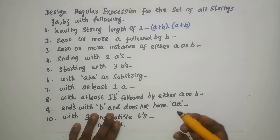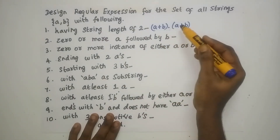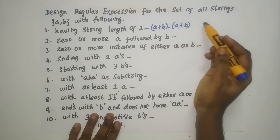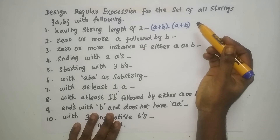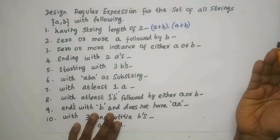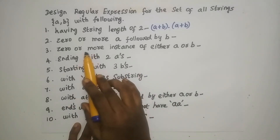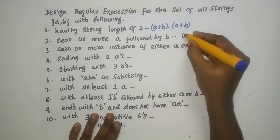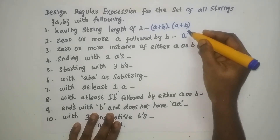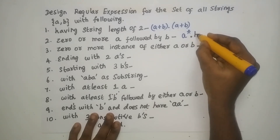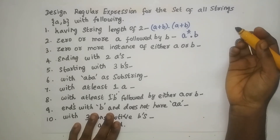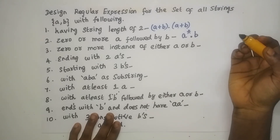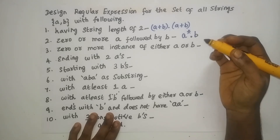If your regular expression is (A + B) concatenation (A + B), then for the first position you can have either A or B, and for the second position you can have either A or B — so the length of the string will only be 2. Next: design a regular expression for the set of all strings over {A, B} with 0 or more A followed by B. Zero or more A means A* (star closure is 0 or more occurrence), followed by means concatenation, so concatenation with B gives A*B. Whenever you have 0 or more, use star closure; 1 or more, use positive closure; followed by means concatenation; either means union.